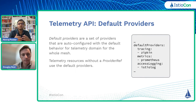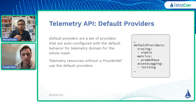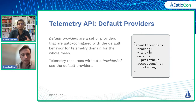In mesh config itself there's a section where you can provide a set of default providers, which can be the same as or different from the Istio-provided Prometheus and access log providers. The reason to do this is so your application teams don't have to explicitly add a provider reference in every telemetry resource — if a telemetry resource is missing a provider reference, we'll pick from the default provider list in mesh config for that specific telemetry type.